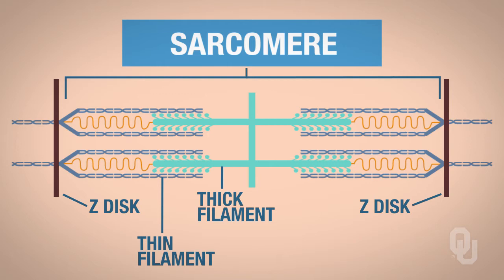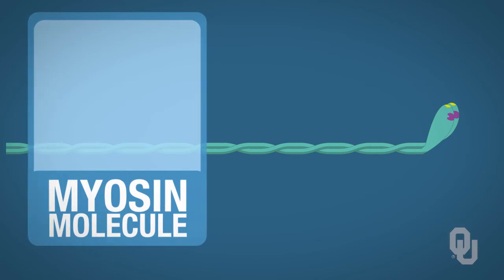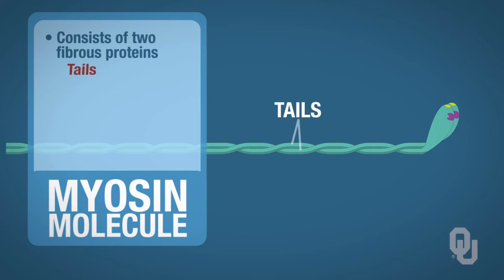Here we will only focus on the thick filaments. To begin, your thick filament consists of one myosin molecule. In this one myosin molecule, it consists of two fibrous proteins, which are called a dimer, and these are the tails.